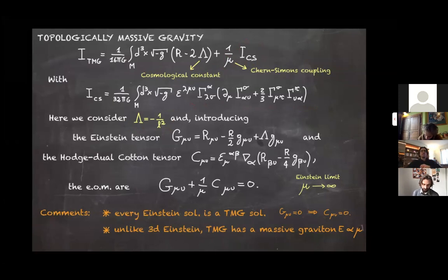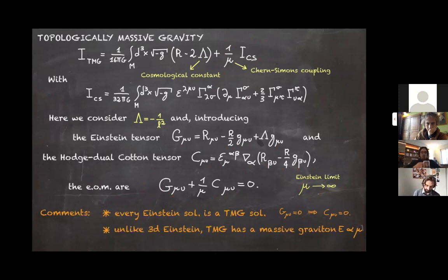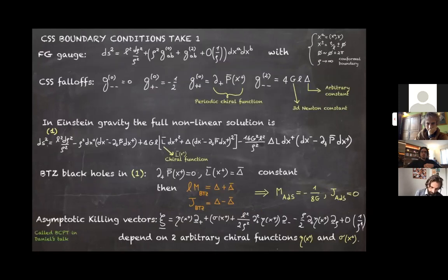The equations of motion of TMG are: G_μν plus (1/μ) C_μν = 0, where G_μν is the Einstein tensor and C_μν is the Cotton tensor — the covariant derivative of the Schouten tensor. The Einstein limit is recovered by sending μ to infinity, which decouples the gravitational Chern-Simons term. Every solution of the Einstein equation is automatically a TMG solution, since G_μν = 0 implies C_μν = 0 in 3D. Unlike 3D Einstein gravity, TMG contains a massive graviton whose energy is proportional to the Chern-Simons coupling.